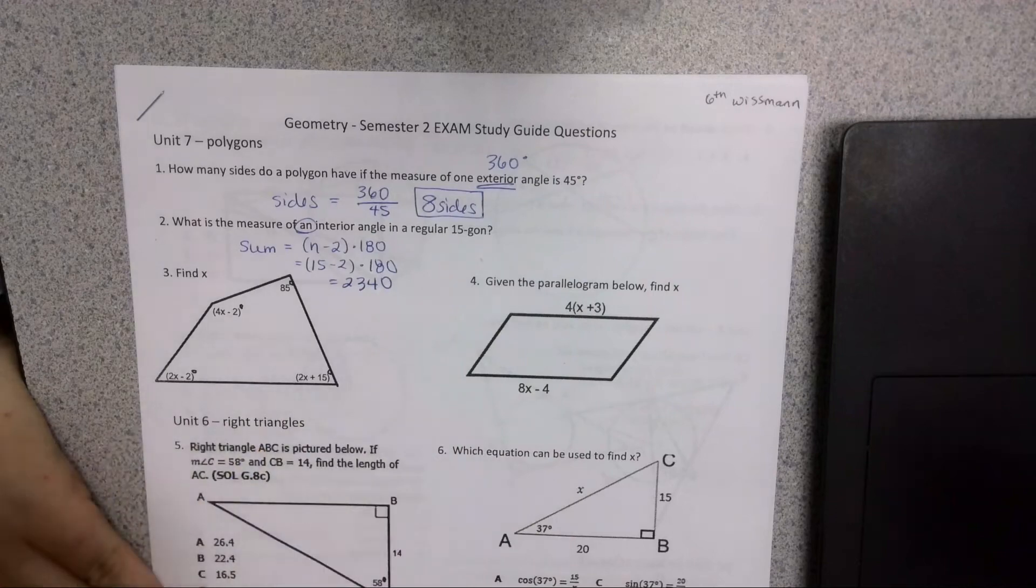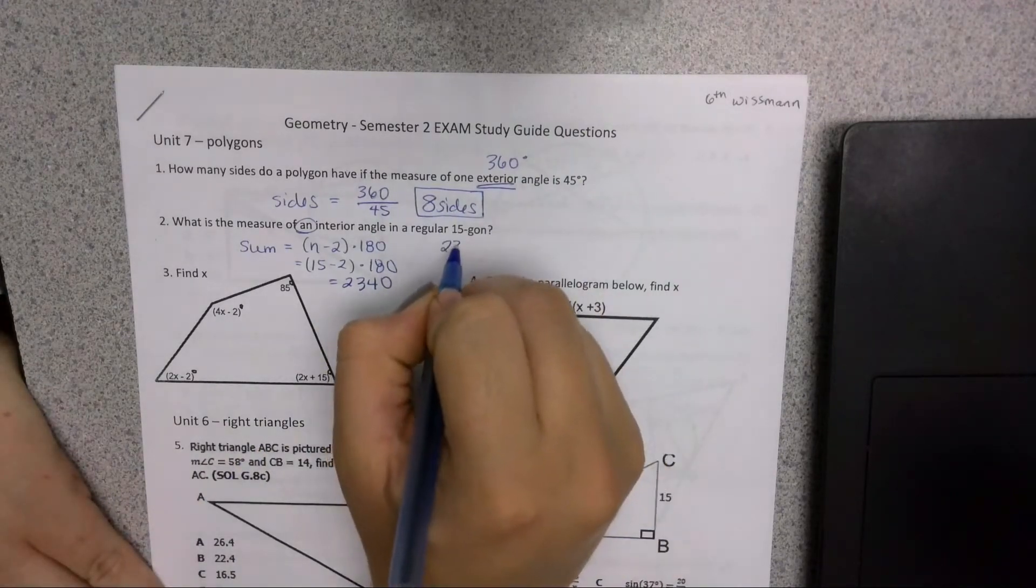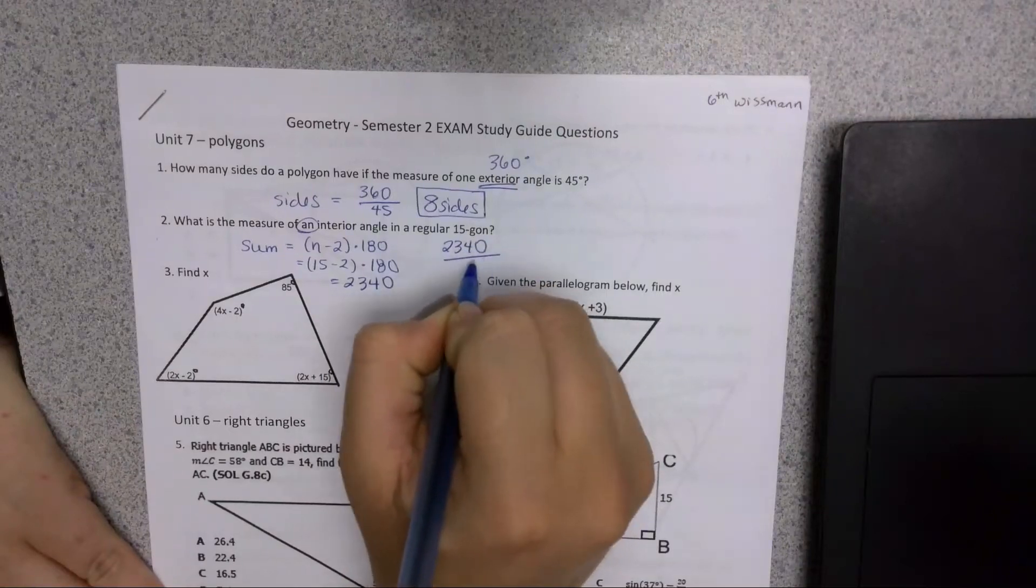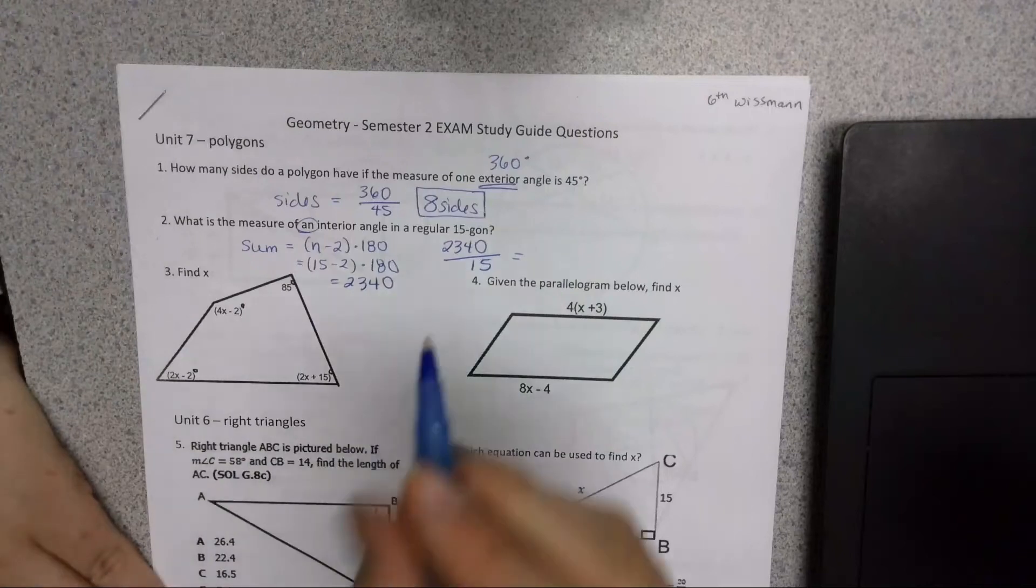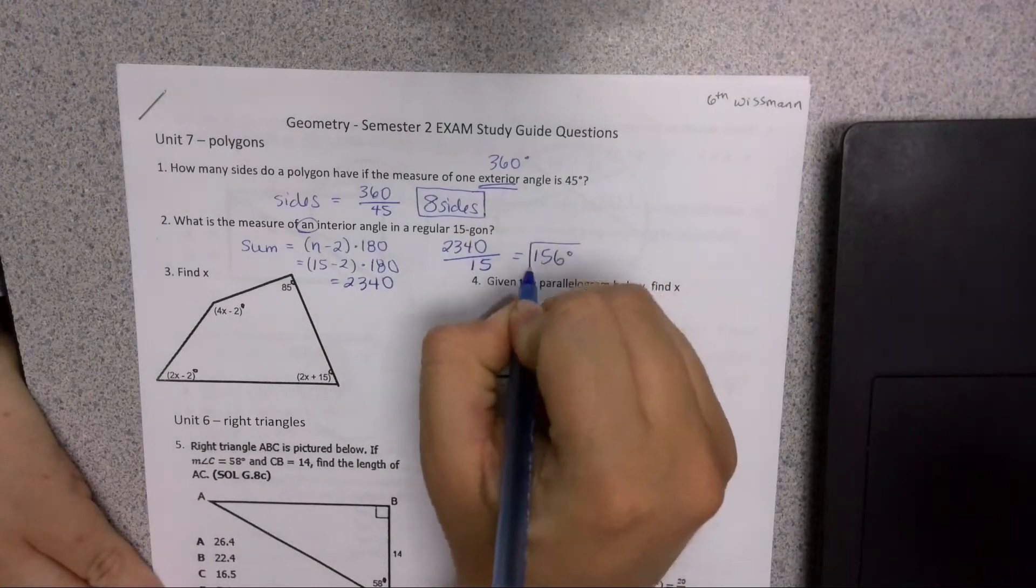But I don't want to know just the sum of all the angles, I want to know what one of them is. So I'm going to take my total and divide it into each of those 15 angles that we have, and that would be 156 degrees each.